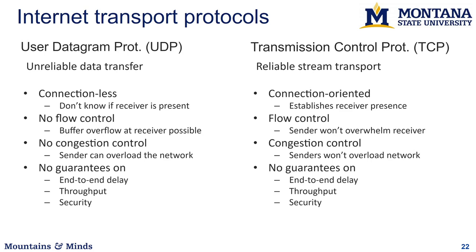You can think of TCP as reliable stream transport — we send streams of data and both sender and receiver can read from a buffer. UDP, or User Datagram Protocol, is connectionless: you can send data even if you don't know if the receiver is present. There's no setup connection, so it's kind of like yelling data and hoping someone hears you. There's no flow control, no congestion control, and no guarantees on end-to-end delay, throughput, or security.